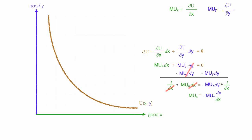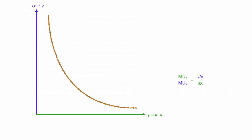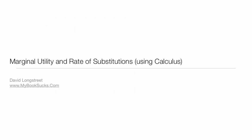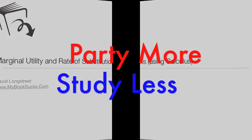Almost done — just a few more steps. I multiply both sides by 1 over MUy. The ratio of the two marginal utilities equals the slope of the tangent line, which is also the change in Y over the change in X. It turns out the marginal rate of substitution equals the ratio of the two marginal utilities. I'll follow up with a numerical example as well.